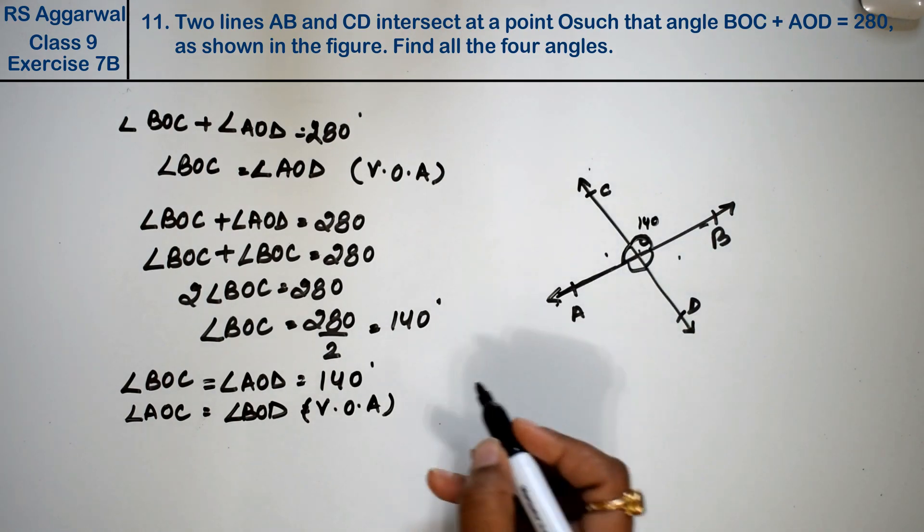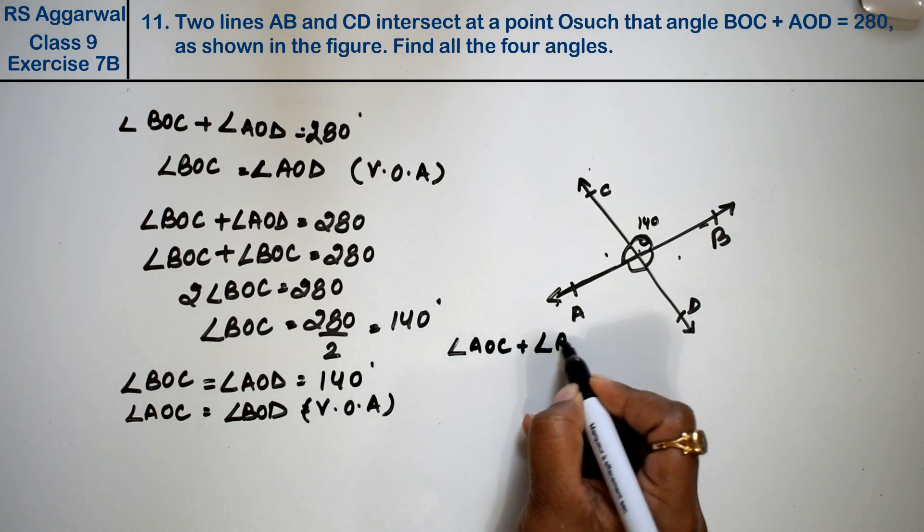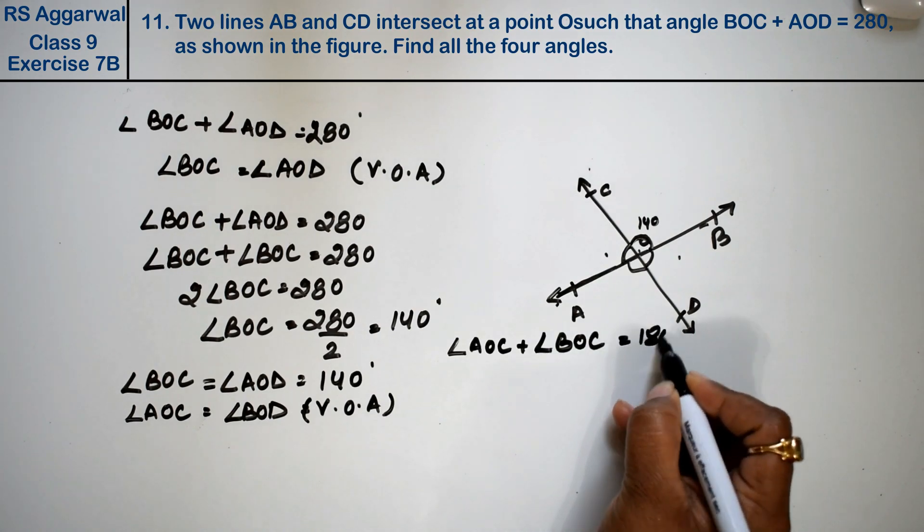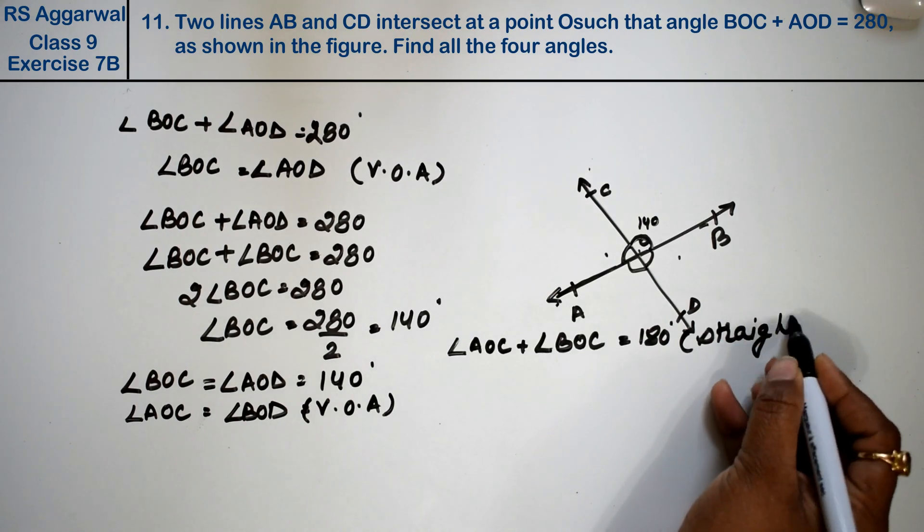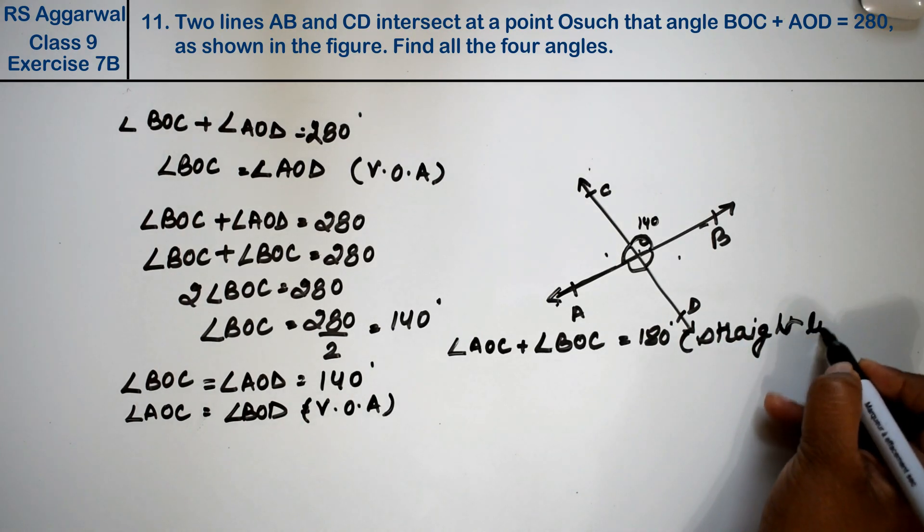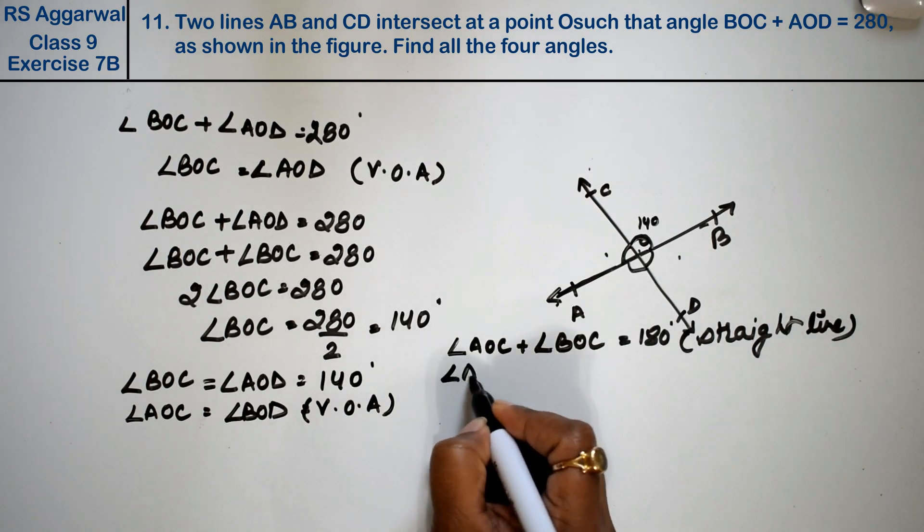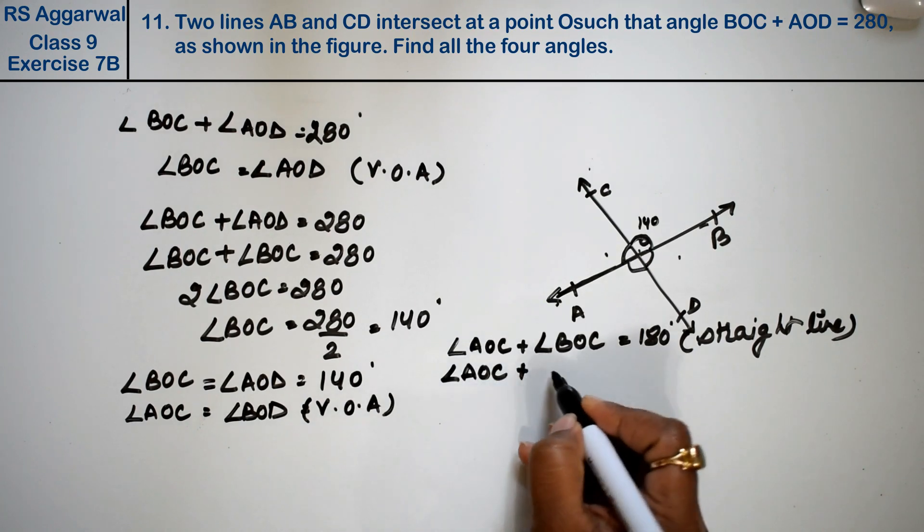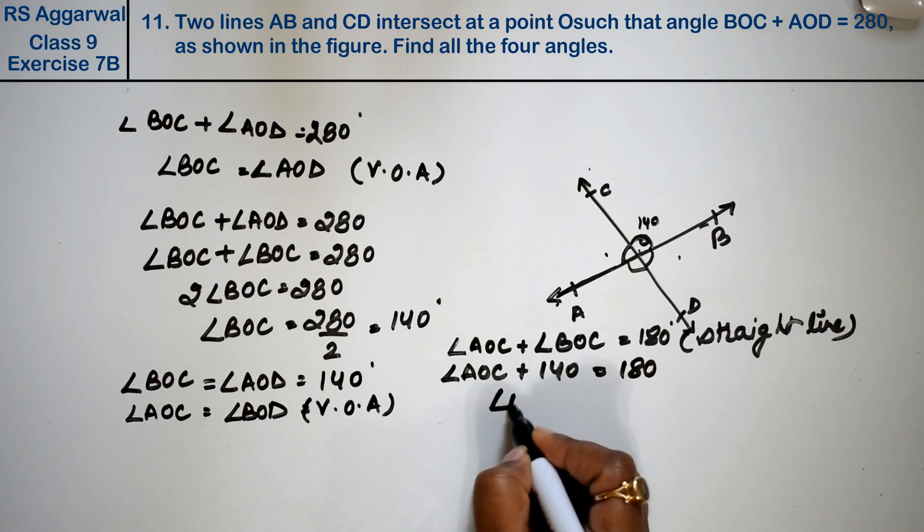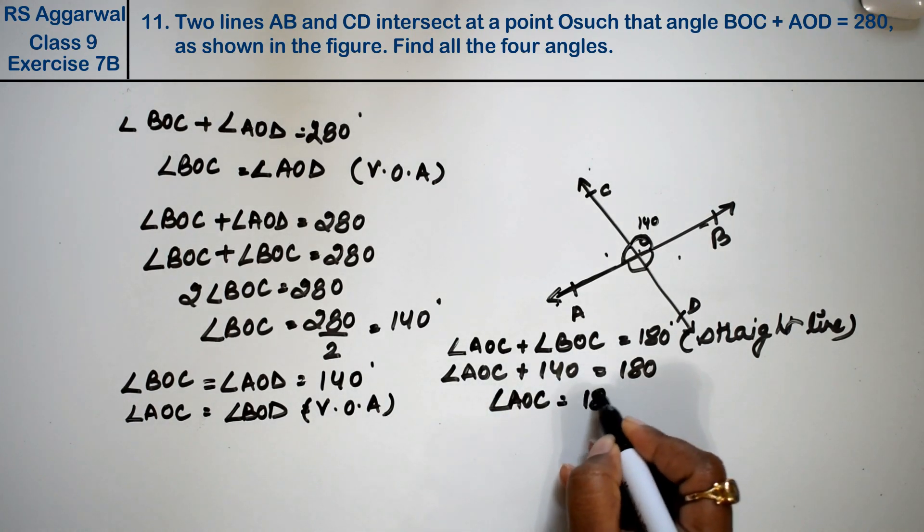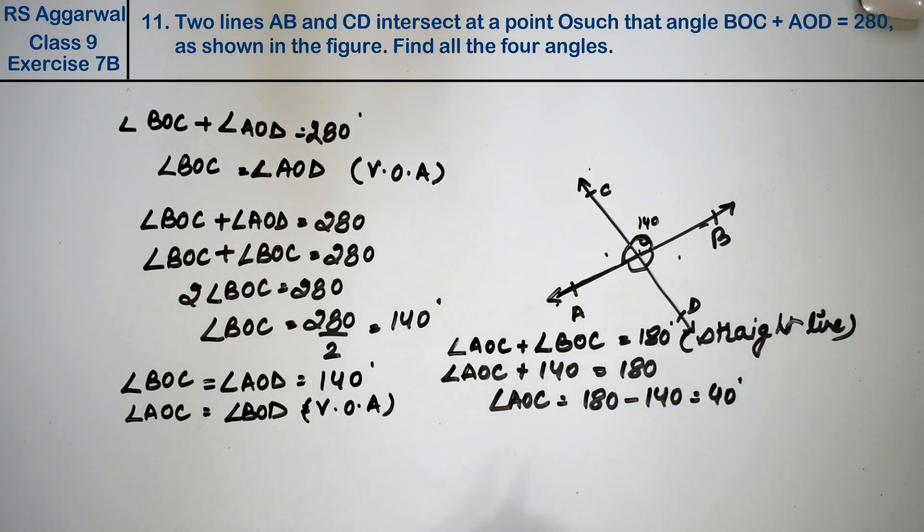So angle AOC plus angle BOC equals to 180 degrees, because it's a straight line. Now we know BOC is 140 degrees, so angle AOC equals 180 minus 140, that is 40 degrees.